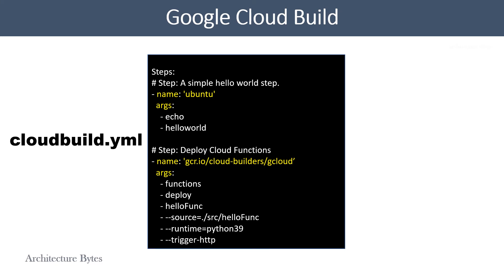Let's take a look at the steps. The name field specifies the Docker container to use. If it's not a URI, it refers to a public image from Docker Hub. If it is a URI of the form gcr.io/cloud-builders, it is referring to one of the many pre-built images provided by Cloud Build. These pre-built images are useful for common tasks — you may even create your own custom container image and use them. In the args field, we specify commands that must be run within the container.